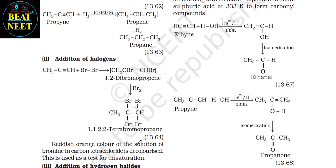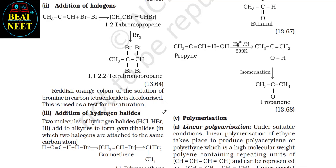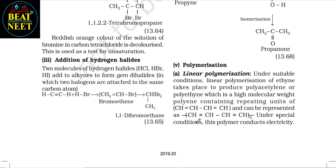Second — addition of halogen: here is the formation of 1,2-dibromopropene. The reddish-orange color of bromine in carbon tetrachloride is decolorized; this is used as a test for unsaturation. Third — addition of hydrogen halides: two molecules of hydrogen halide add to alkynes to form gem-dihalides, in which two halogens are attached to the same carbon atom. See this reaction.